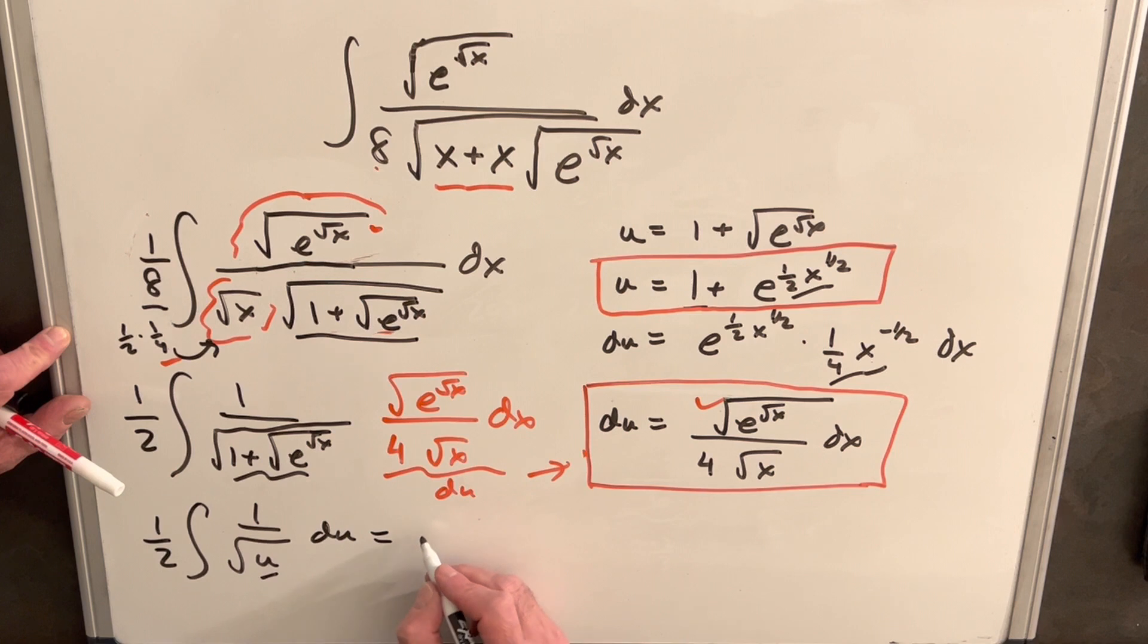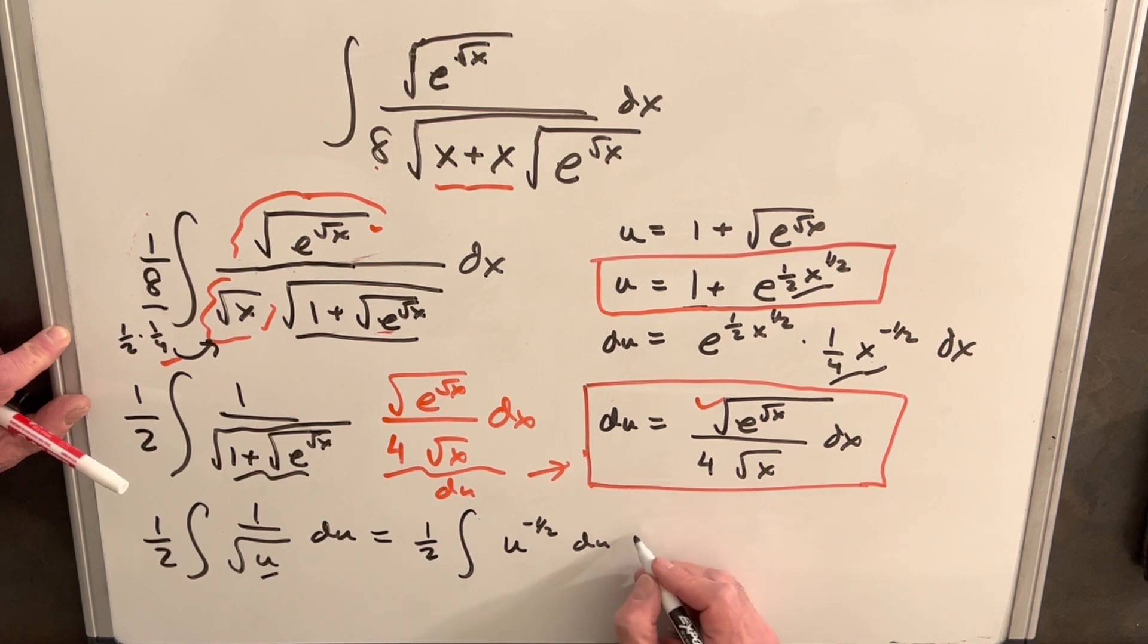But then let's bring this to the numerator, so we'll have 1 half integral u to the minus 1 half du, and now we can integrate. We'll have 1 half, just power roll.